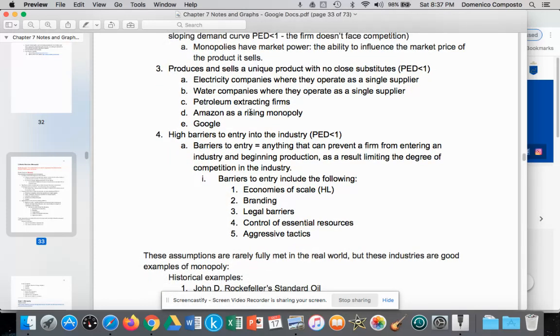In addition, monopolies produce and sell a unique product with no close substitutes. Some examples being electrical companies, or they operate as the single or only supplier for a particular city, state, or even for a nation. Water companies as well—one dominant water company that provides for the entire city, state, or country.